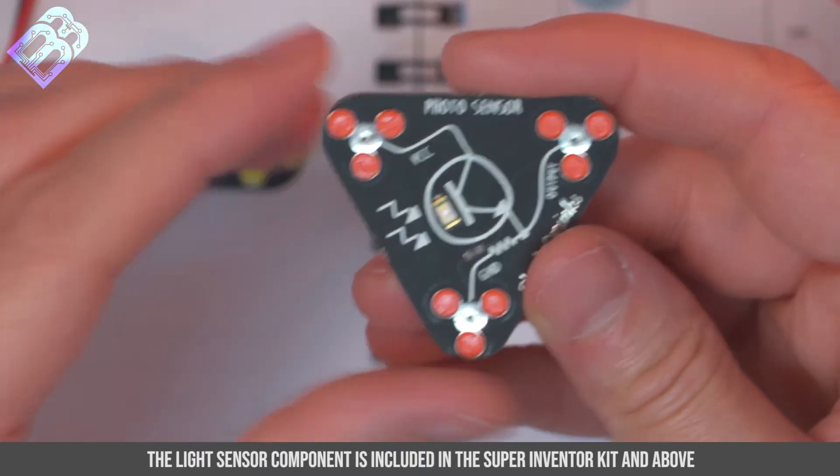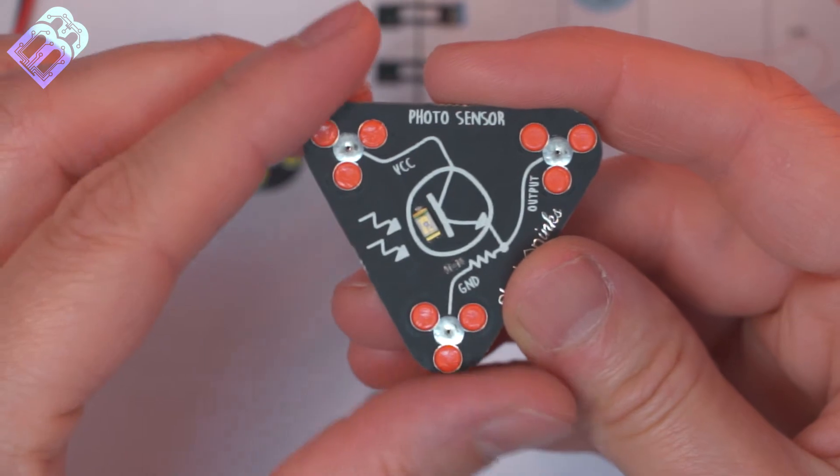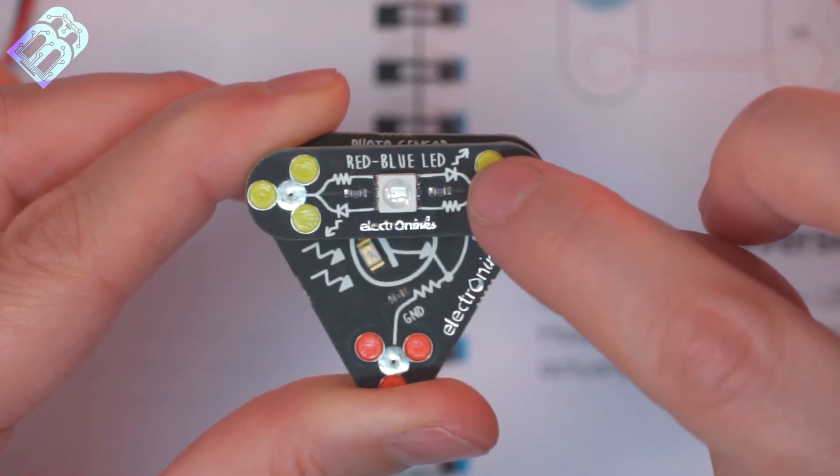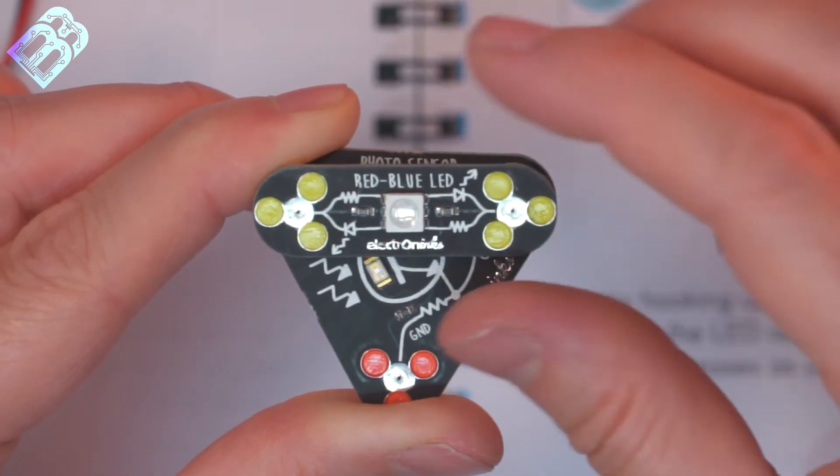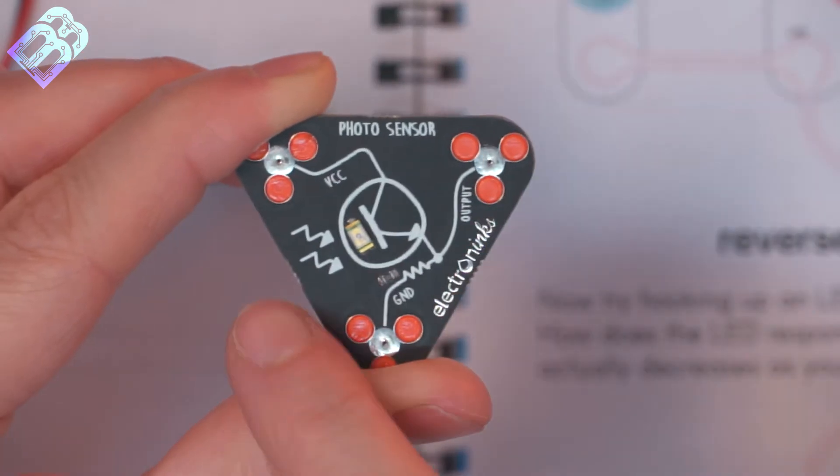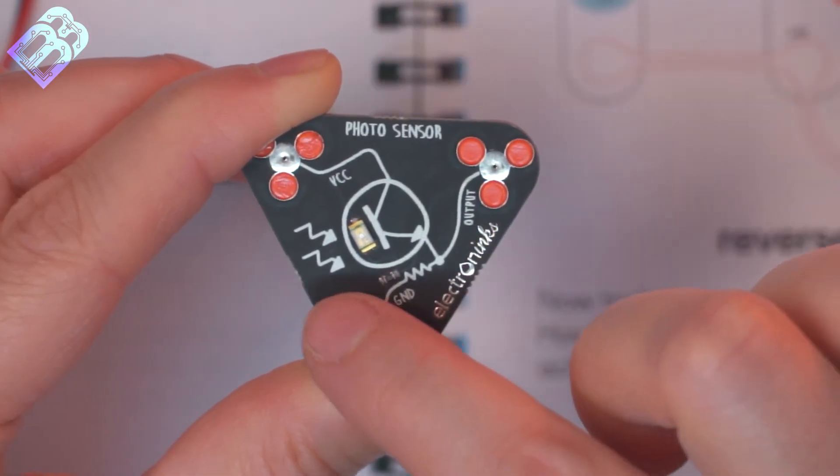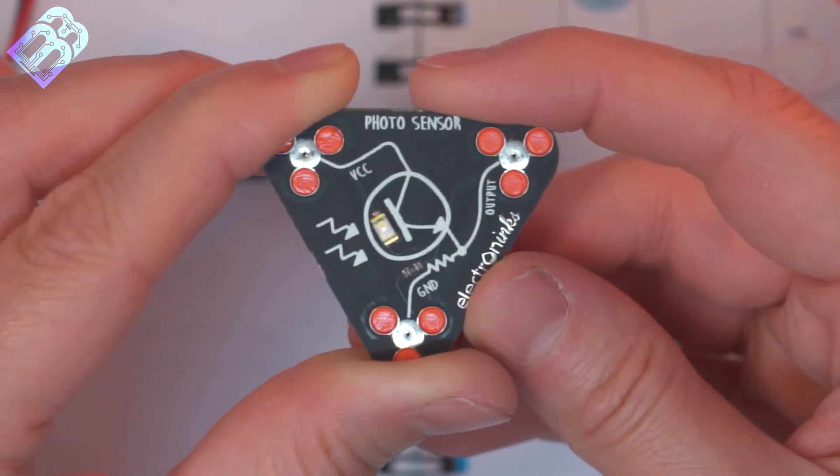Our photo sensor module has some familiar symbols on it, namely these two little arrows. Our LED module also has arrows on it. Right here we have an arrow coming out of our symbol for LED in this little circuit diagram. That means that light comes out of it. Here our arrows are pointing into what looks like a symbol for a transistor. That means that light is going to be going in and the photo sensor module reacts to that light.